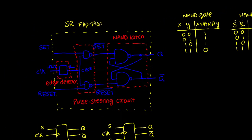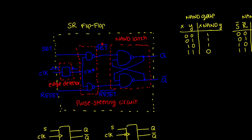Back to the pulse steering circuit — I want to understand how it changes the operation of my NAND latch and hence the output. My idea is to derive a truth table for the SR flip-flop. The edge detector is a very simple circuit that takes advantage of propagation delay. It takes this clock input — a 50% duty cycle square wave at a specific frequency — and outputs a signal of the same frequency.